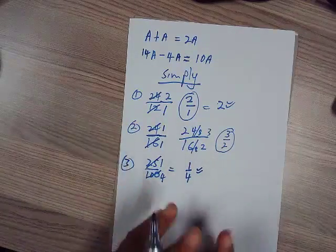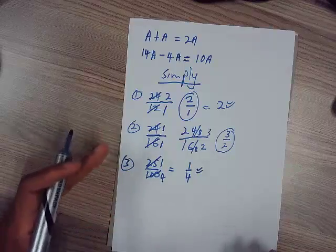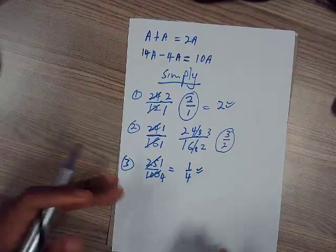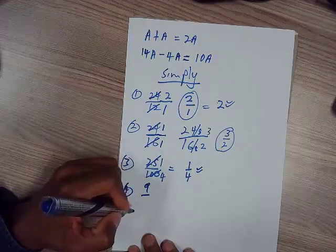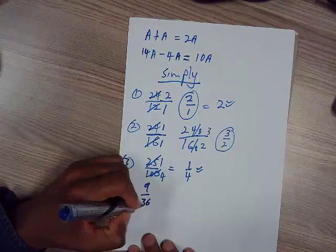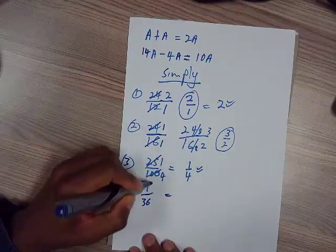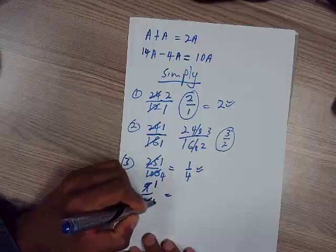So if you have 9 over 36, how many times does 9 go into 9? Once. Into 36? Four times. It's much easier to deal with a quarter than deal with that huge number.